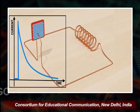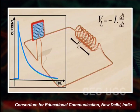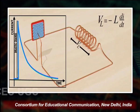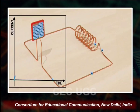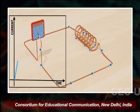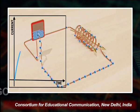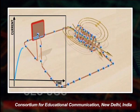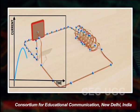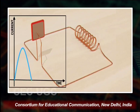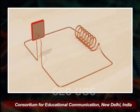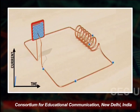The graph continues continuously. The current flowing gives a voltage V_L across the inductor which can be written as minus L dI/dt. The current flows towards the inductor, and the feedback produces a sinusoidal wave. This wave is in the form of a sine wave when we are using the LC circuit.